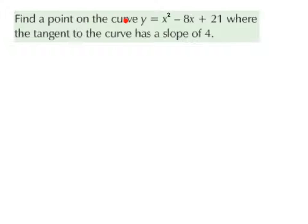Find a point on the curve y equals x squared minus 8x plus 21, where the tangent to the curve has a slope of 4. The very first thing that we want to notice is that we're looking for a point. So our final answer needs to be a coordinate with an x value and a y value.